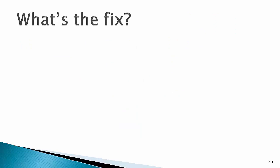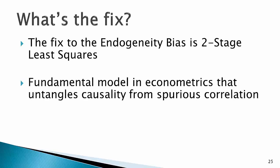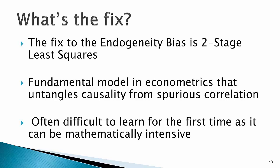We've talked a lot about the endogeneity bias, so what's the fix? Well, the fix to the endogeneity bias is a two-stage least squares regression model. This model is fundamental in econometrics because it's able to successfully untangle causality from spurious correlations. However, it's often difficult for students to learn two-stage least squares for the first time, as it can be mathematically intensive, yet most textbooks or university courses use this approach.